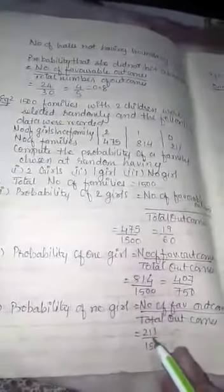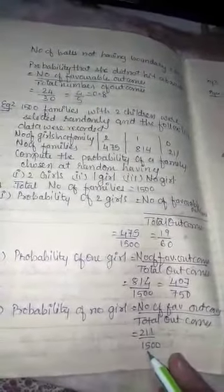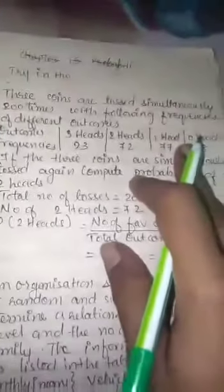Probability of no girl means zero girls. How many families are having no girls? That is 211. So P(no girl) = 211/1500. This is the third part, which you can also do as homework.